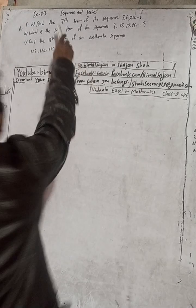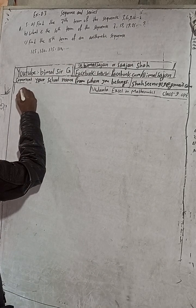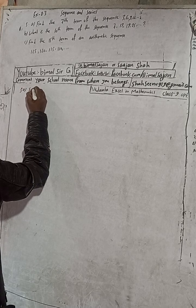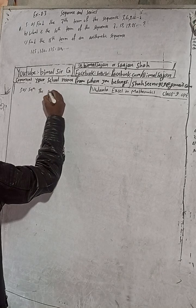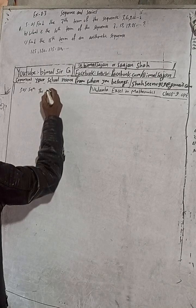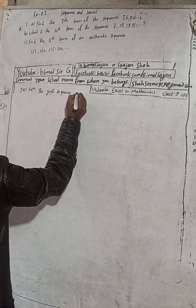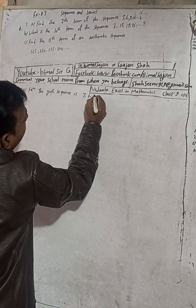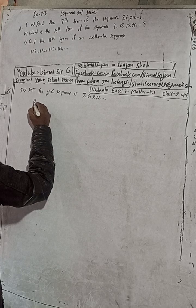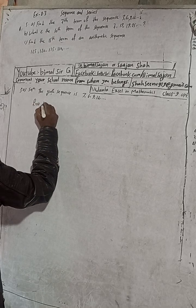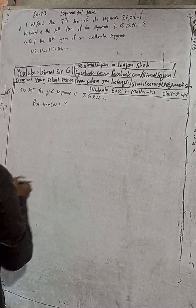The question is: find the 7th term of the sequence 3, 6, 9, 12. Here is 5A solution. The given sequence is 3, 6, 9, 12. The first term, indicated by A, is 3.